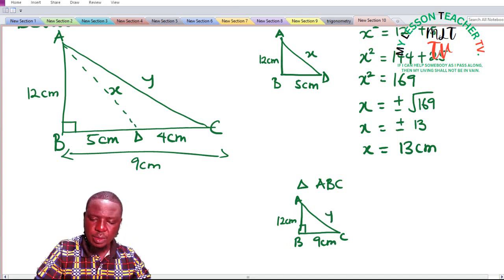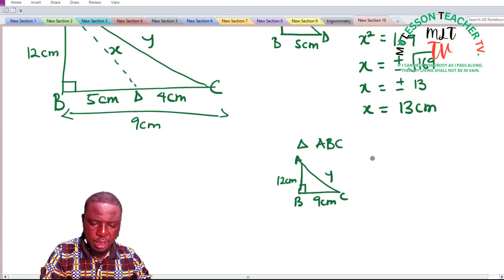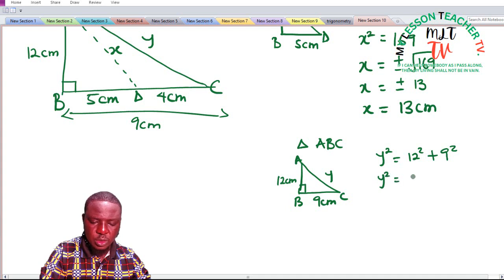And we are asked to find y. We shall then apply the Pythagorean theorem. In this case we are also asked to find the hypotenuse side, so that means that y squared is equal to 12 squared plus 9 squared. When you simplify, you have y squared to be equal to 144 plus 9 squared, which is 81.